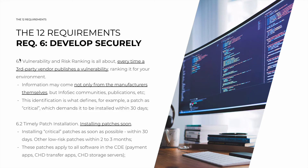The first sub-requirement is 6.1, vulnerability and risk ranking. Every time a third-party vendor publishes a vulnerability, you want to rank it for your specific environment. Vulnerability information doesn't just come from the manufacturers themselves — it may come from information security communities, publications, or others. The goal is that this identification and risk ranking results in classifying a patch as critical or not, depending on the risk of that vulnerability, because critical patches must be installed within 30 days.